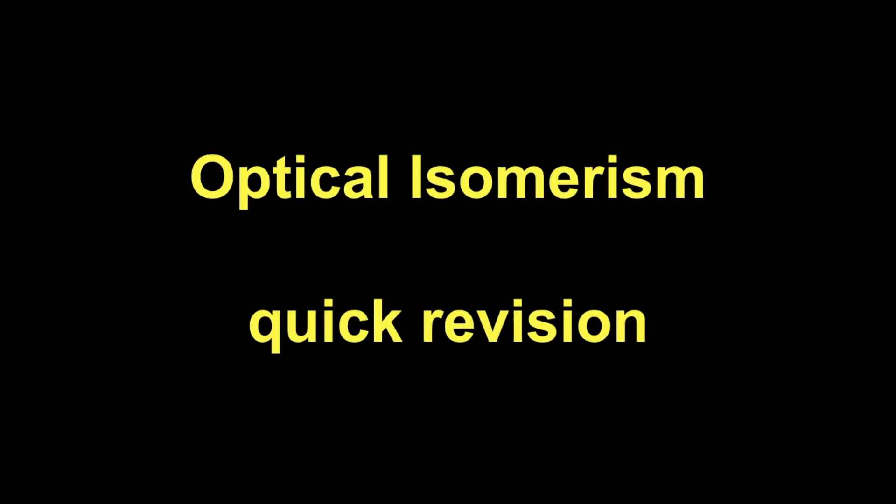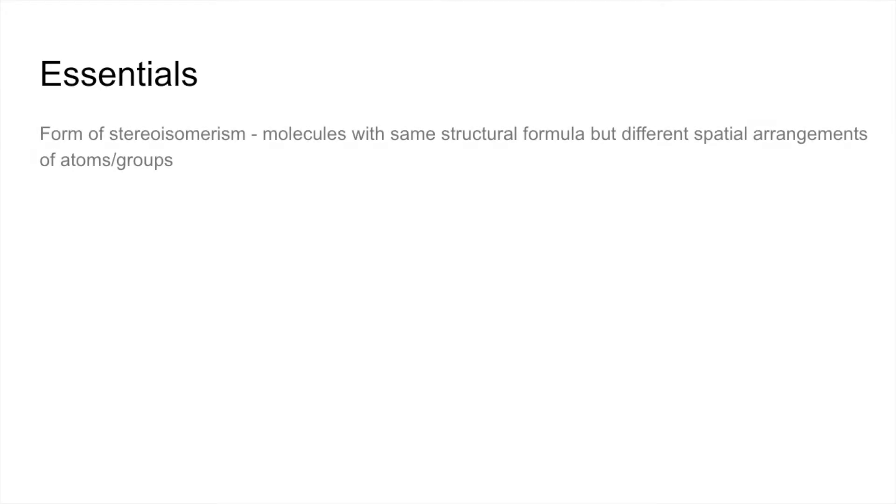Quick revision video on optical isomerism. Starting with the essentials, it's a form of stereoisomerism, so that's molecules with the same structural formula but different spatial arrangements of atoms or groups.